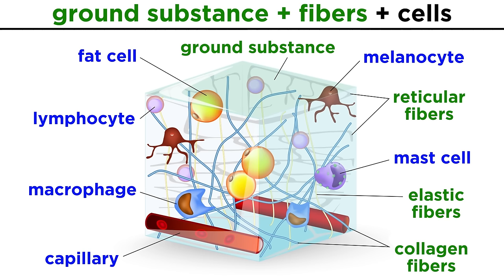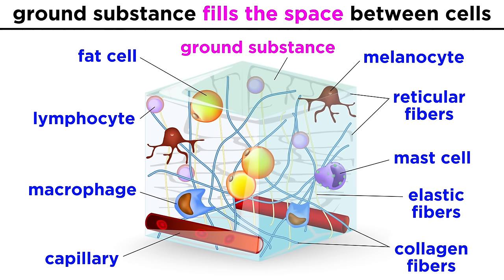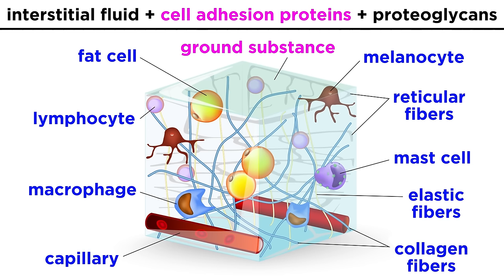Let's start with ground substance. This is the material that fills the space between the cells and connects all the fibers. It's made up of interstitial fluid, cell adhesion proteins, and proteoglycans, which to varying degrees act as a sort of glue.